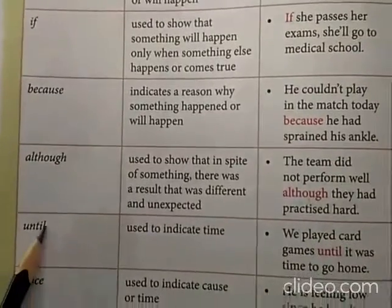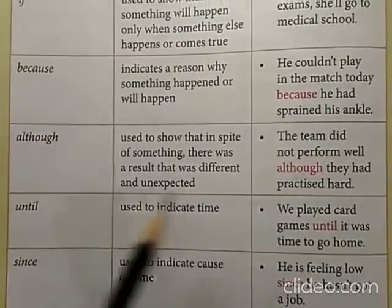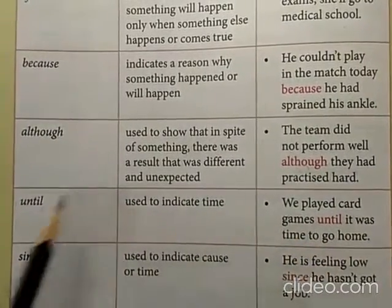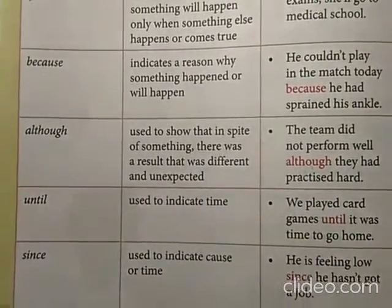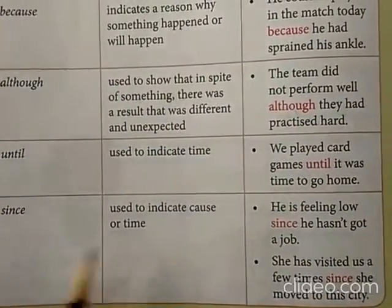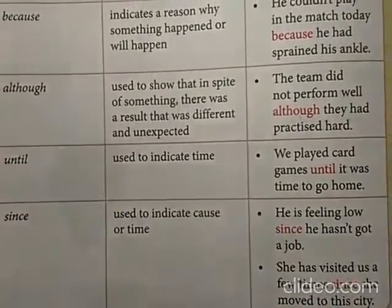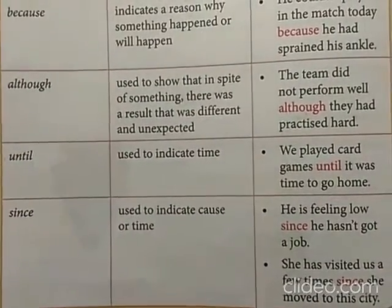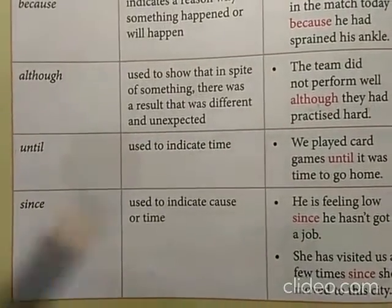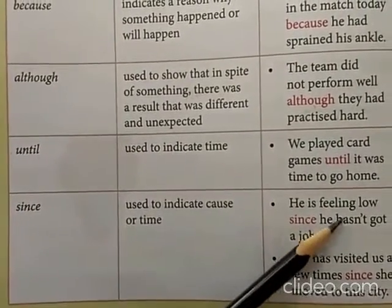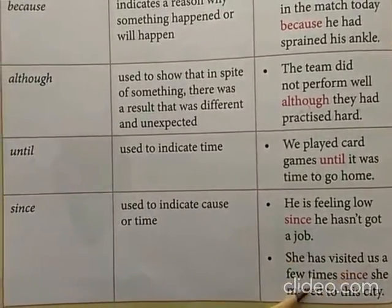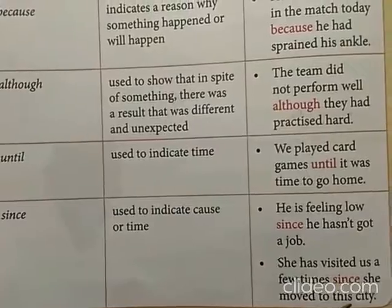Then we have 'until', which is used to indicate time. For example: We played card games until it was time to go home. Then we have 'since', which is used to indicate cause or time — for example on shop boards you often see 'Since 1972'. For example: He is feeling low since he hasn't got a job, and: She has visited us a few times since she moved to this city.